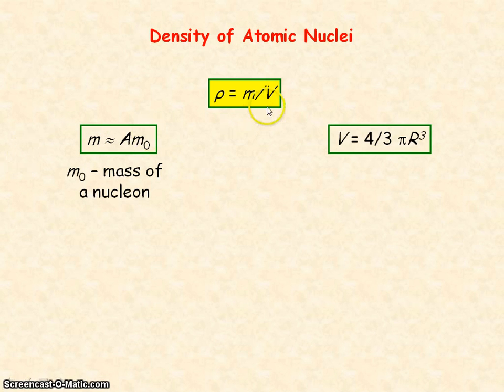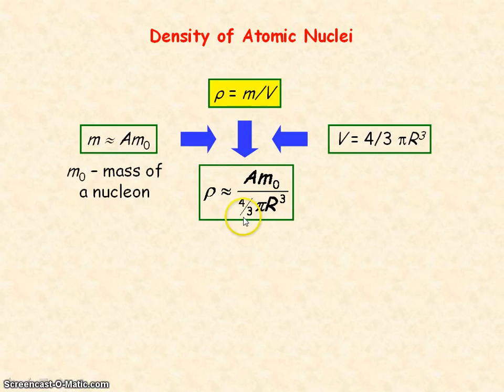And the volume of the nucleus, if we consider it a sphere, is equal to 4 thirds pi R cubed. And so if we substitute these values into the equation for density, we get this.